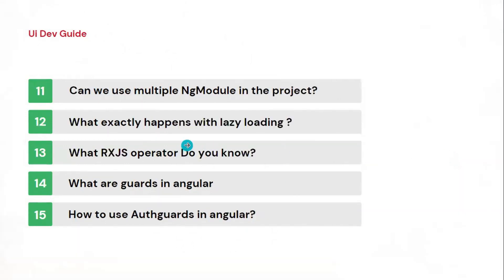The next question is: how can we use multiple NgModules in a project? This comes up whenever you are creating a shared module or lazy loading. You usually create a lazy module in your project, and at that time an NgModule file is created for your module, which is then included in the main NgModule. They will ask: can we create the same NgModule file twice in our project? When creating a shared component module, we include it into the main NgModule in the src.